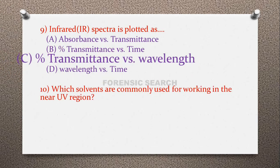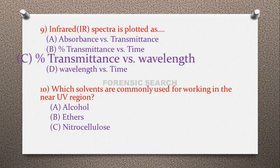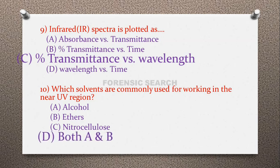Question 10: Which solvents are commonly used for working in the near UV region? Option A: alcohol, option B: ethers, option C: nitrocellulose, option D: both A and B. The correct answer is option D — both A and B. In the UV region, the most commonly used solvents are alcohol and ethers, because both absorb at wavelengths shorter than 185 nanometers.